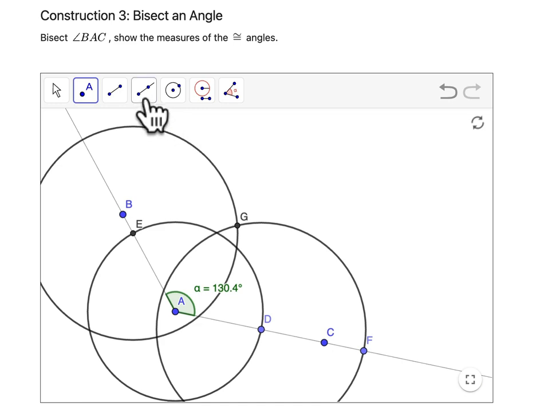So I go to my ray tool here, go from A to G, and I want to confirm that I actually did bisect the angle. So I'm going to draw the ray from A to F, and then from A to B.